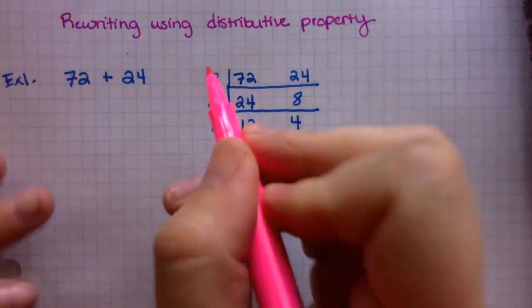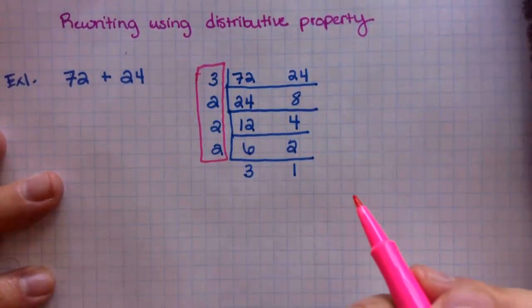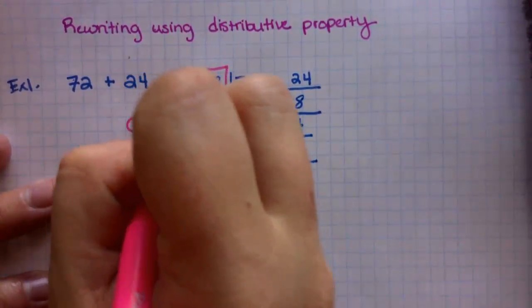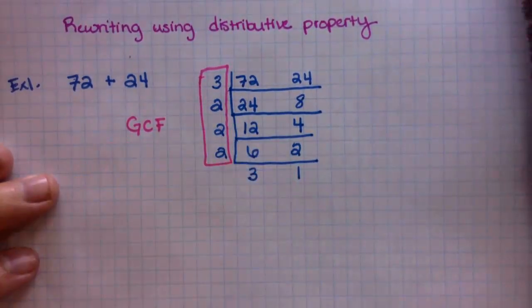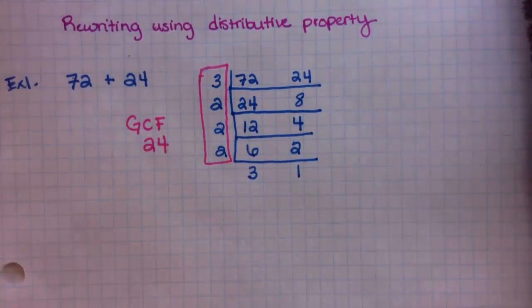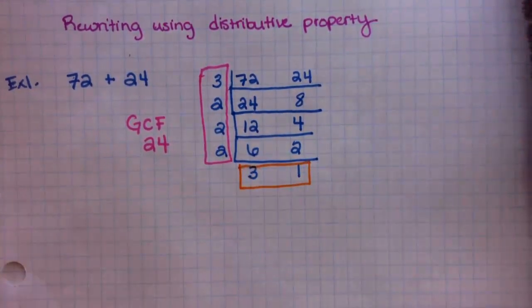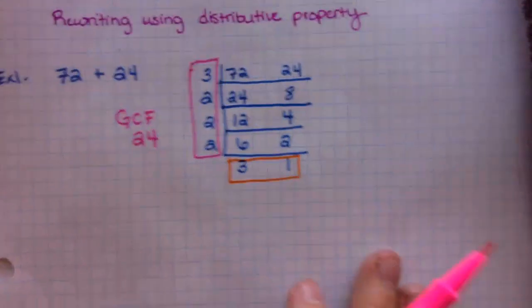So now we're at the very bottom. We've done the whole ladder. If the ladder part got you confused, just go back and watch the other lessons. Alright, so this is how it works. We're going to take the GCF, which we have to find multiplying all these numbers together. So the GCF is 3 times 2 times 2 times 2.